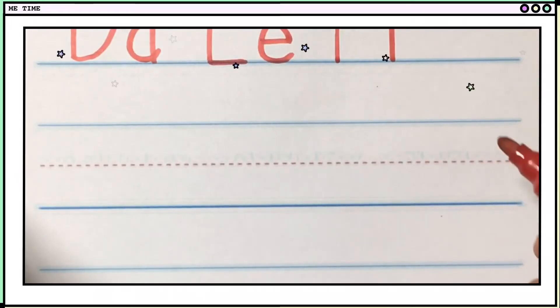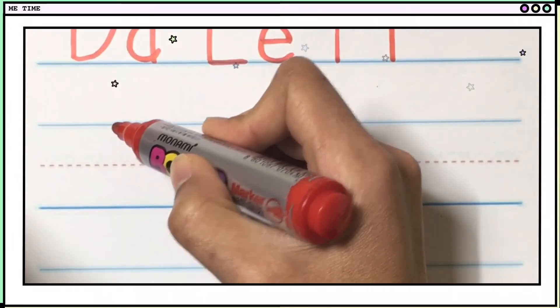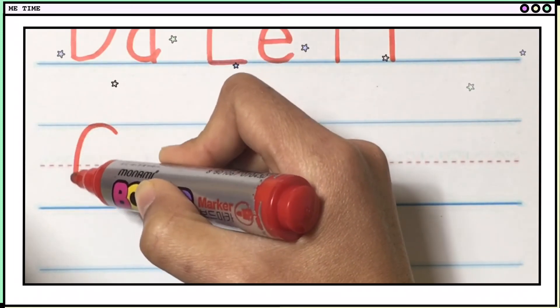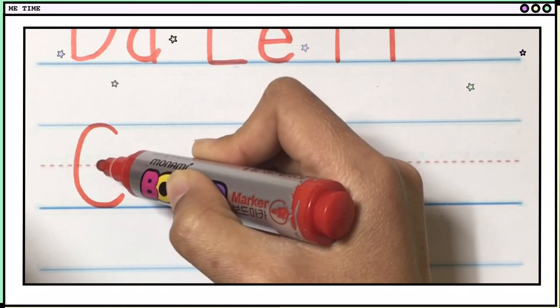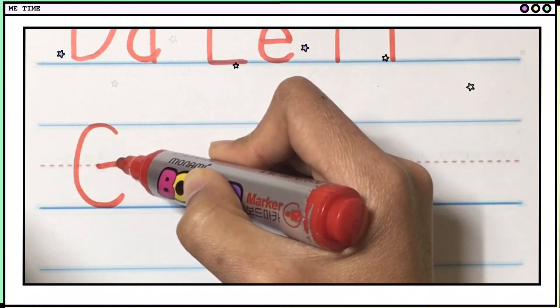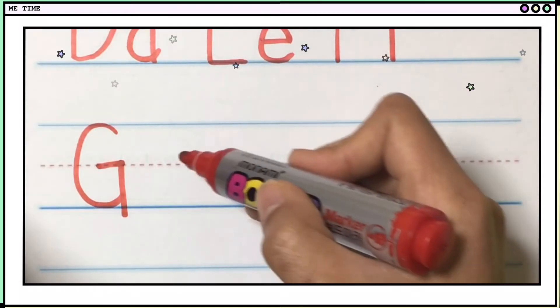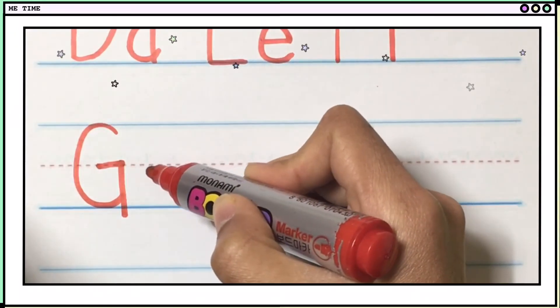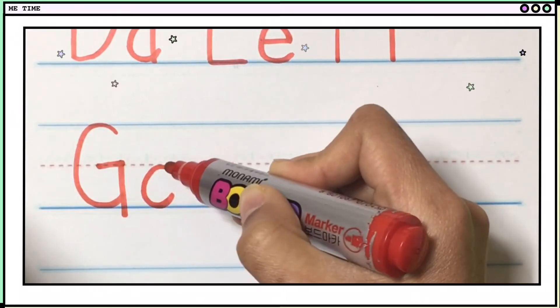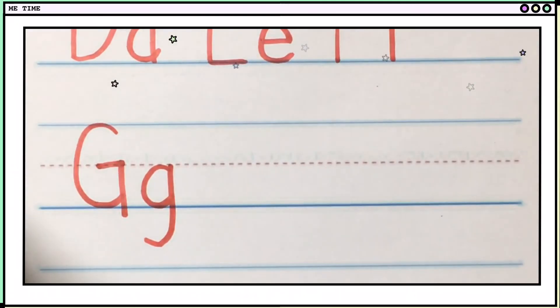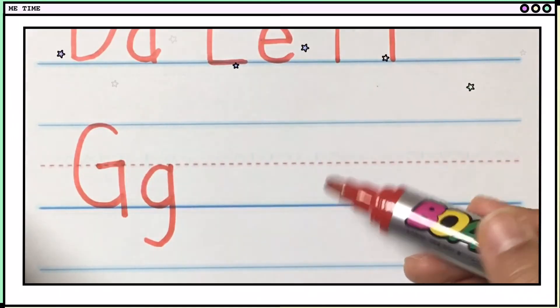Next is G. Big G is like C. First you make a big C. And then, like this. One, two. Okay, that's how you make big G. Small G, you also start with C. And then you make a tail. Okay, that's big G and small G. Big G, small G.